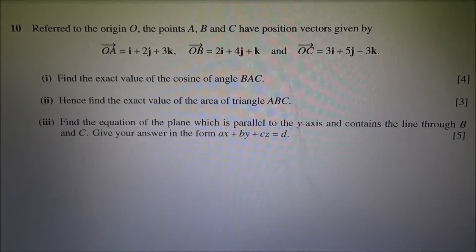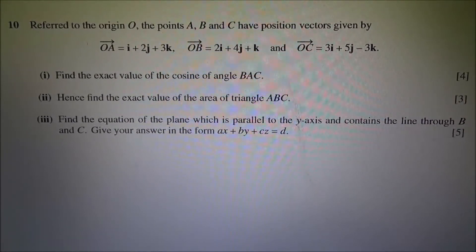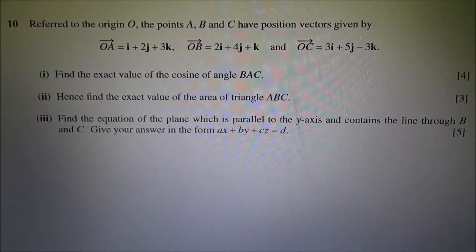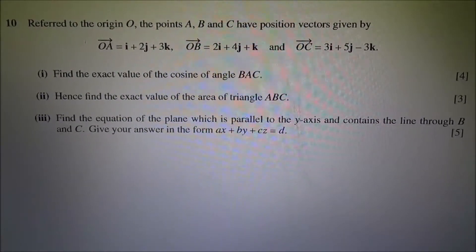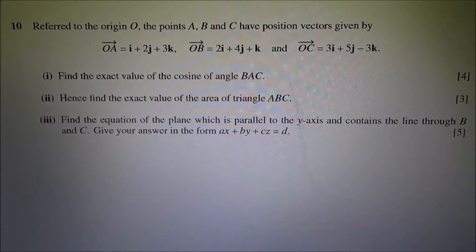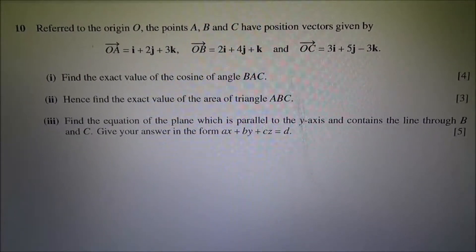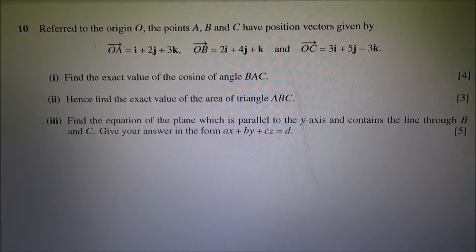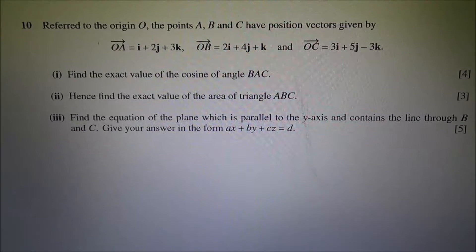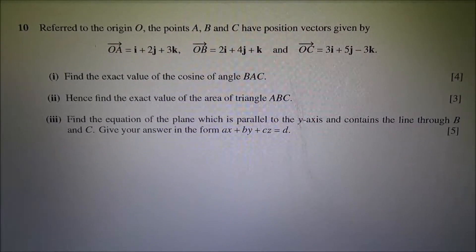Hi, for question number 10, referred to the origin, the points A, B and C have position vectors given by OA equals I plus 2J plus 3K, OB equals 2I plus 4J plus K, and OC equals 3I plus 5J minus 3K. For the first part, find the exact value of the cosine of angle BAC. Second part, hence find the exact value of the area of triangle ABC. And for the third part, find the equation of a plane which is parallel to the y-axis and contains the line through B and C. Give your answer in the form AX plus BY plus CZ equals D.